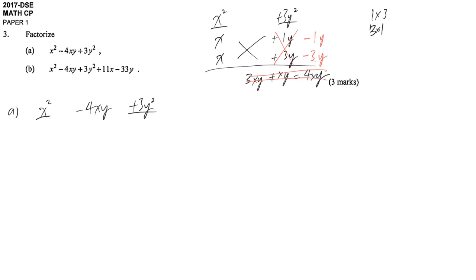If we do so, we check again. x times negative 3y: negative 3xy. x times negative 1y: we have negative xy. Negative 4xy, which is the same as the middle term that we have. That's why we can rearrange in this way.